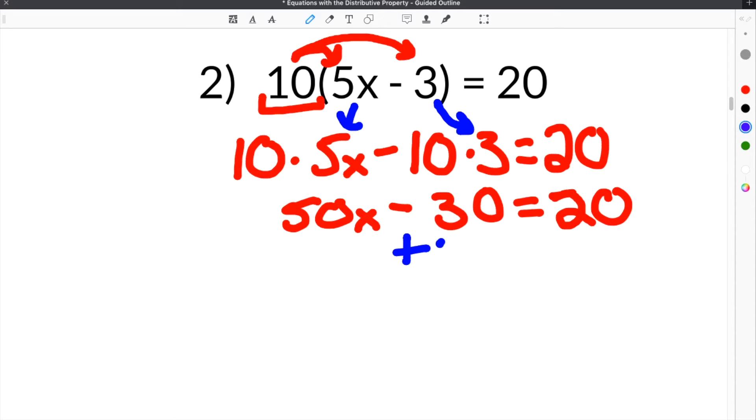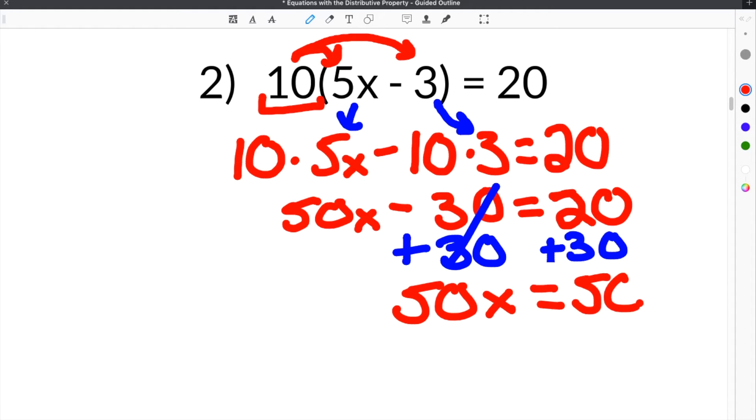Next thing we need to do is we need to get the constants on one side together. So we're going to add 30 to this side and also 30 to this side. The 30s will cancel. We bring down 50x here. And 20 plus 30 is 50 on that side. Finally, we have to get x by itself. So we divide both sides by 50. The 50s cancel, and then on this side, you have 50 divided by 50, which is just 1.